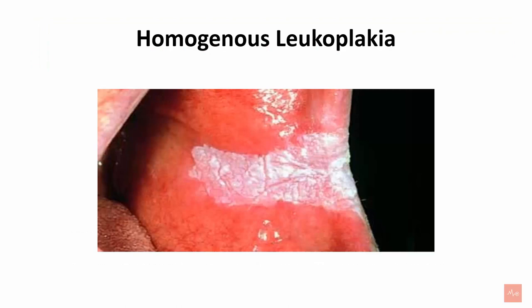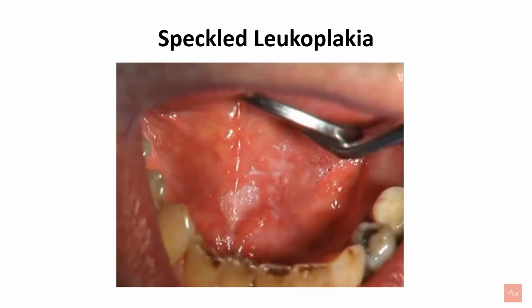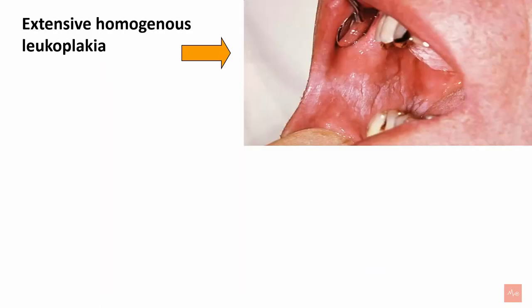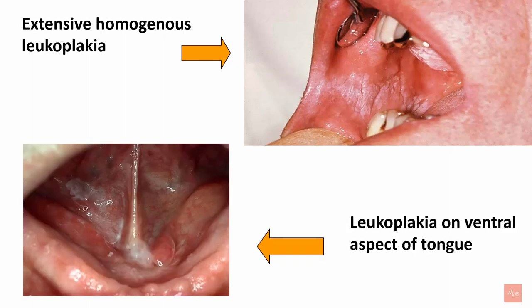This is an example of homogenous leukoplakia on the left buccal mucosa near the corner of the mouth. An example of speckled leukoplakia on the floor of mouth and ventral aspect of the tongue showing a red and white lesion. Verrucous leukoplakia on the lower labial gingiva showing a thick white patch with verrucous surface. This is an extensive homogenous leukoplakia extending on the right buccal mucosa from the corner of mouth to the retromolar region. This is leukoplakia on the ventral aspect of the tongue.